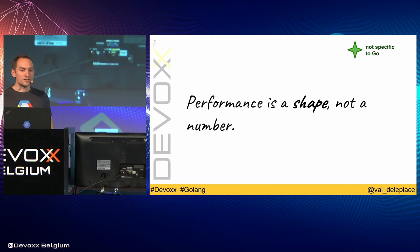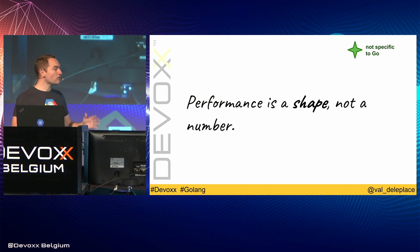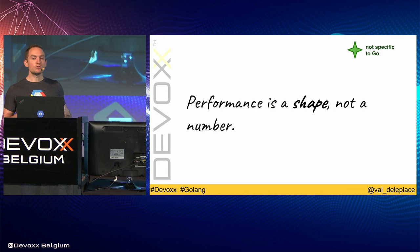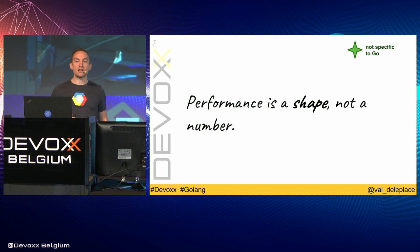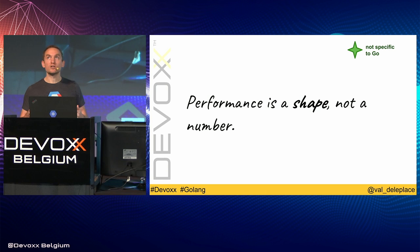Performance is a shape, not a number. There is no such thing as a single number for the performance of your system. The latency and the throughput depend a lot on the use case, on the current load of the system, on the caches being warm or cold, on the wind, on solar flares — you name it. Our job is generally to minimize the most important parts of the shape.